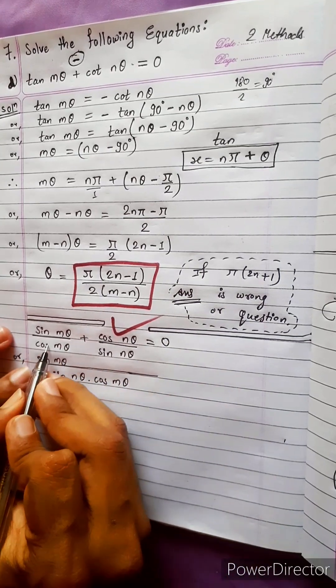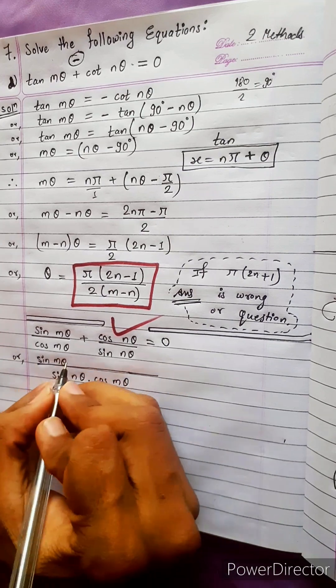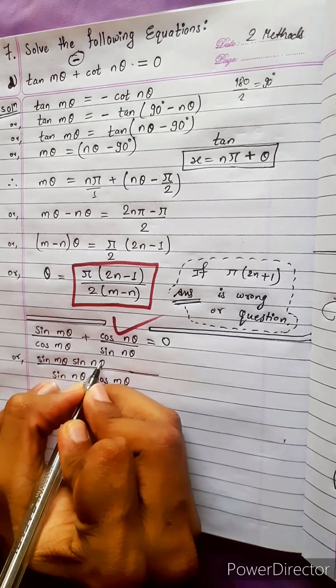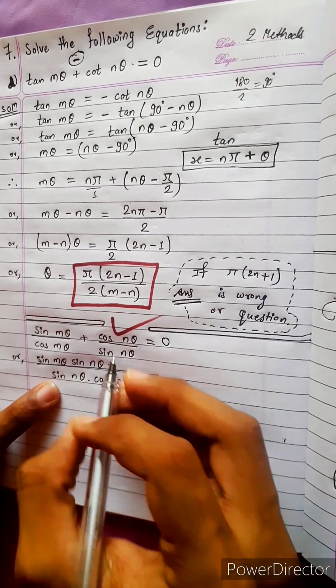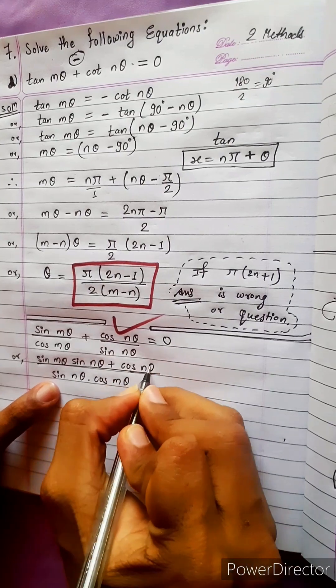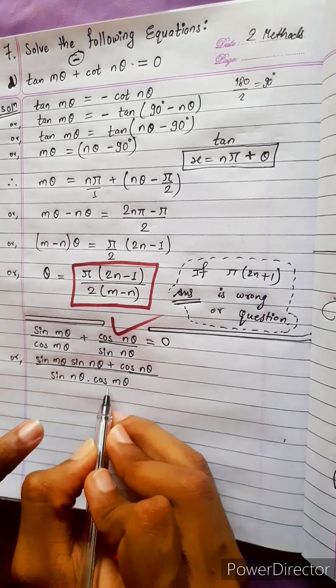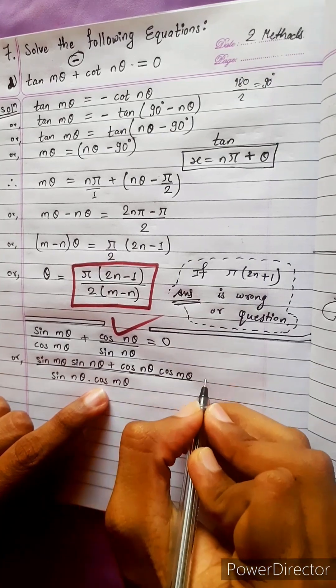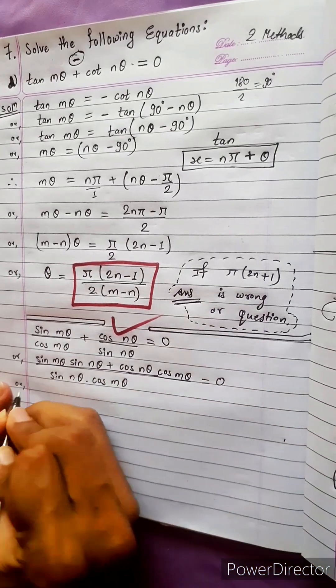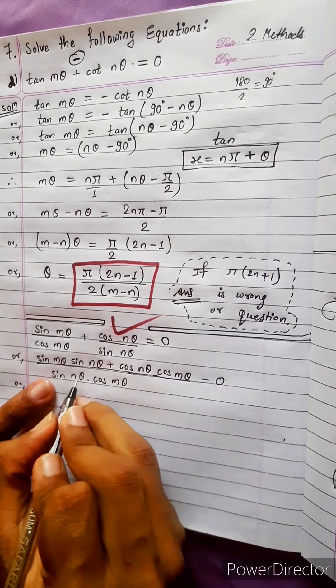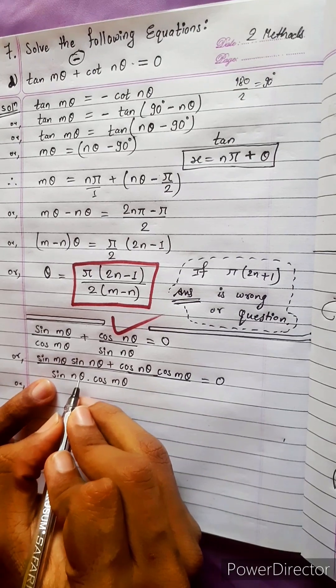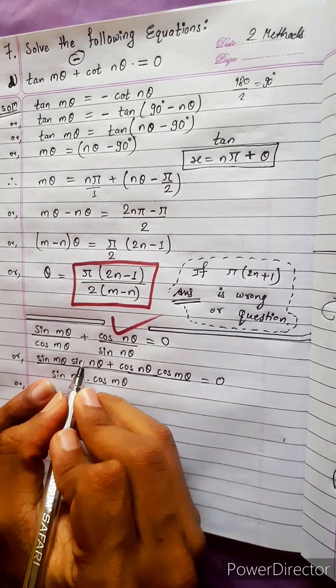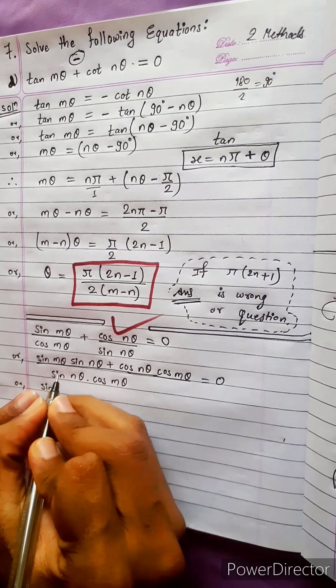Now after this we can take LCM sine n theta into cos m theta. Here is sine m theta already in numerator, cos m theta what is remaining sine n theta is remaining. Plus cos n theta is already there so copy down.